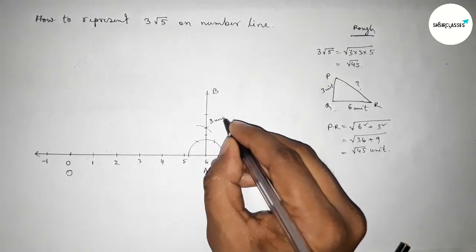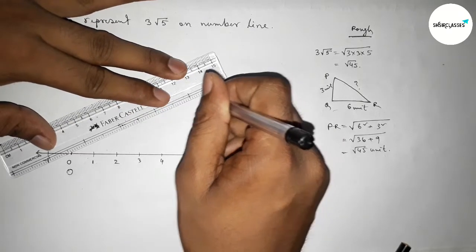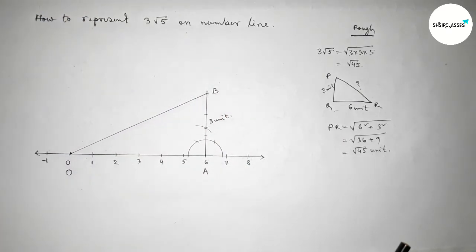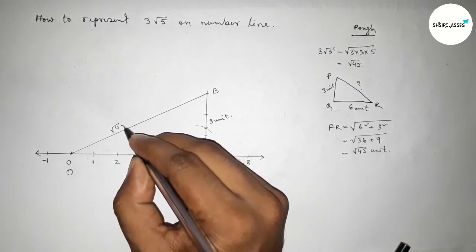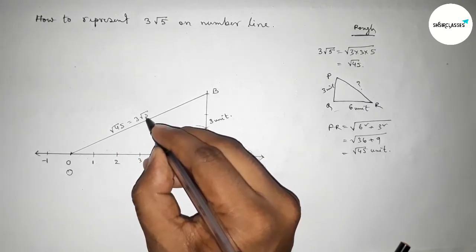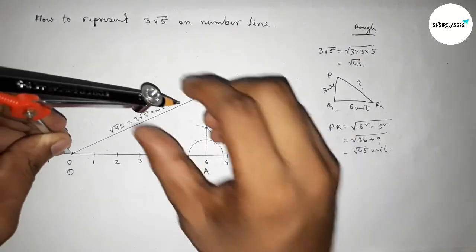Taking here point B and this is three unit length. Now joining O and B. So from right angle triangle OAB, this hypotenuse is root 45, so this is equal to 3 root 5 unit.